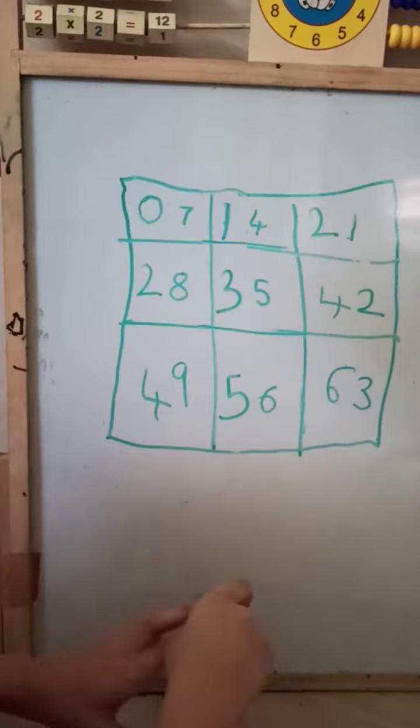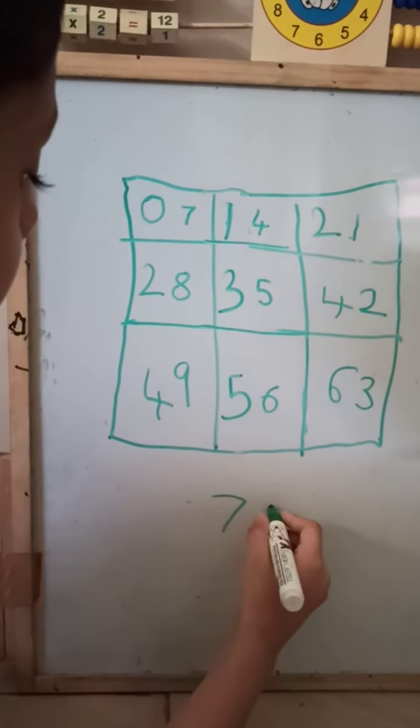Seven nine's sixty-three, seven ten's seventy. Done.